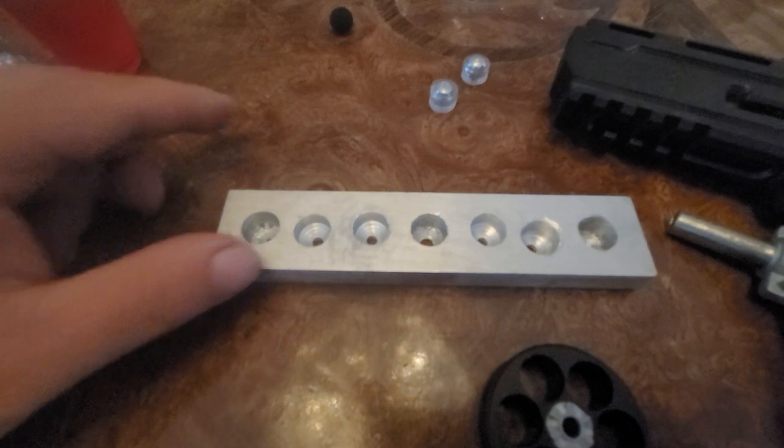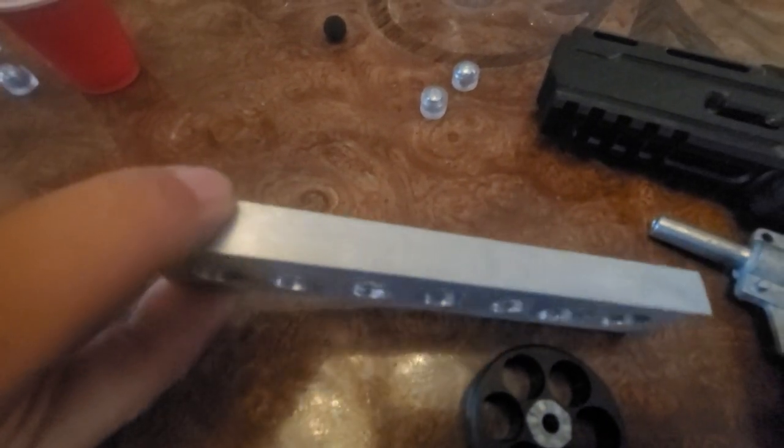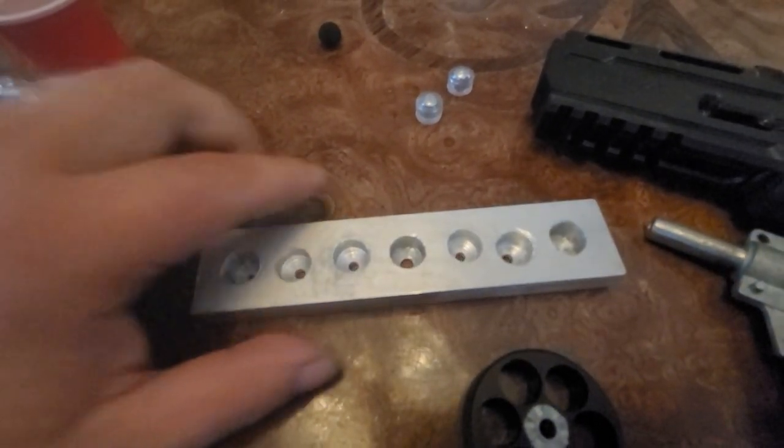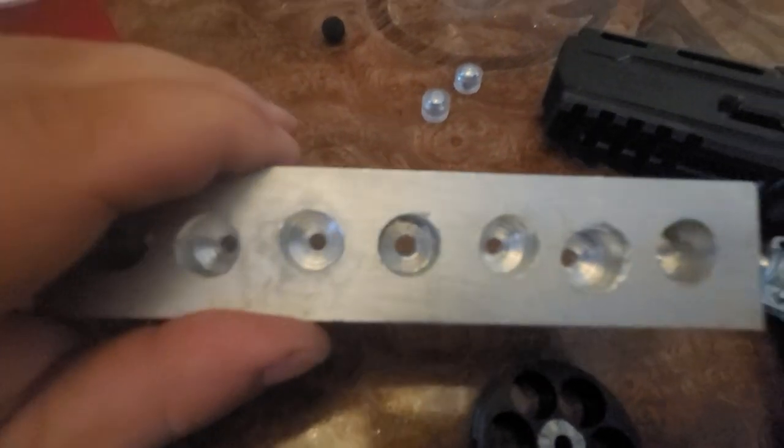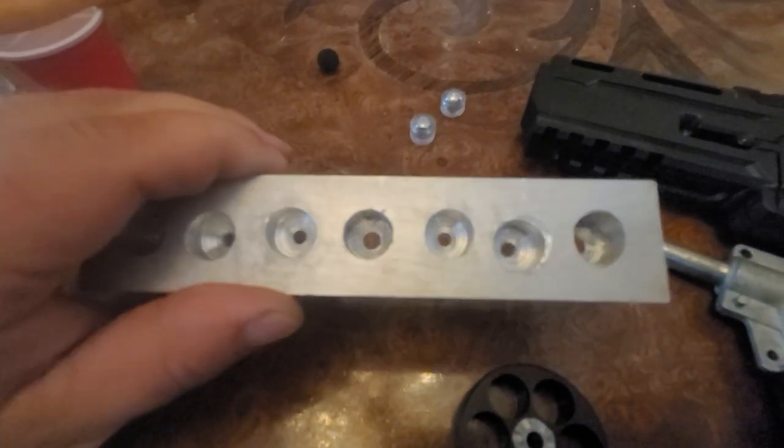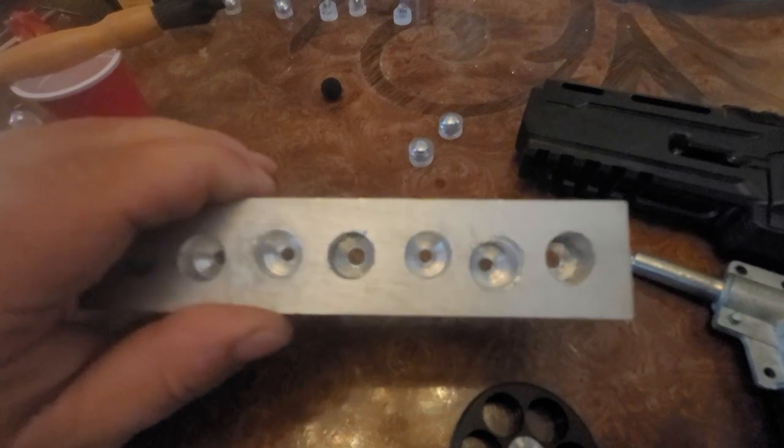But I made a slug maker. This is a half inch piece of aluminum bar. These aren't particularly clean. So I used a drill bit. I tried a spade bit. I tried a Forstner bit.